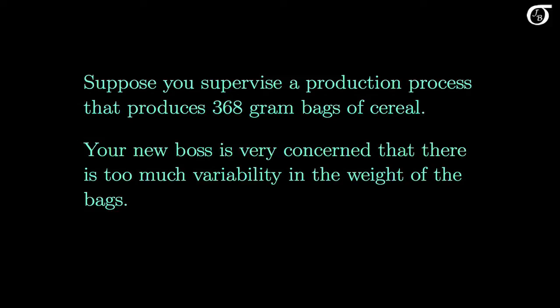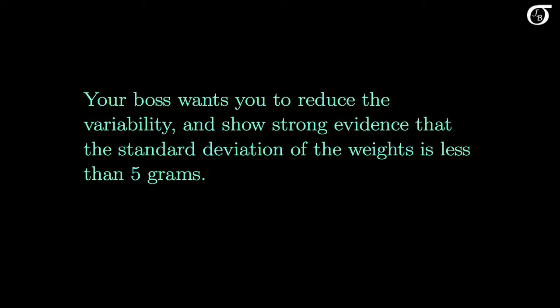But that's not practical to achieve, and there's going to be some variability. Since consumers don't like getting less than what they've paid for, producers have to put in more product into a package on average than what they state, in order to make sure that almost everyone is getting at least what they paid for. So high variance can cost producers money because they have to put more product into the packages. Your boss wants you to reduce the variability and to show strong evidence that the standard deviation of the weights is less than 5g — a standard deviation of less than 5g is acceptable.